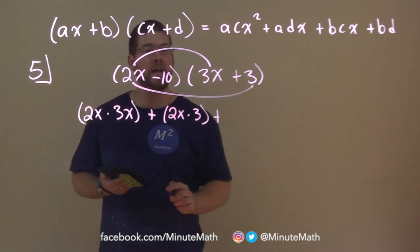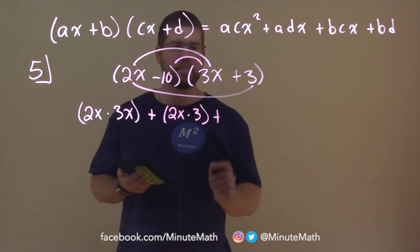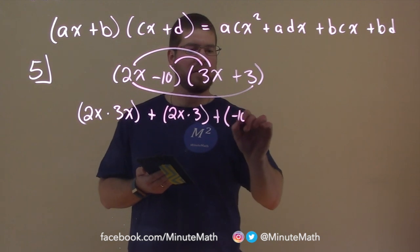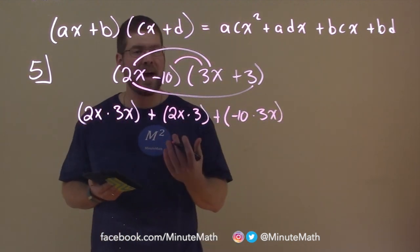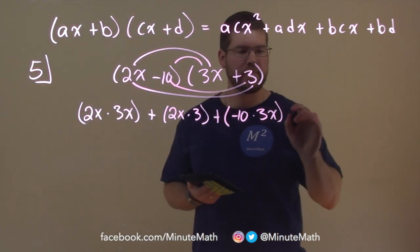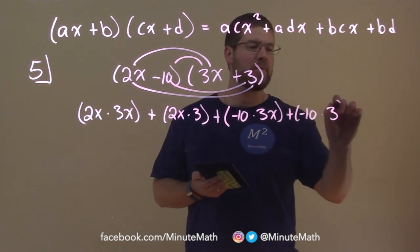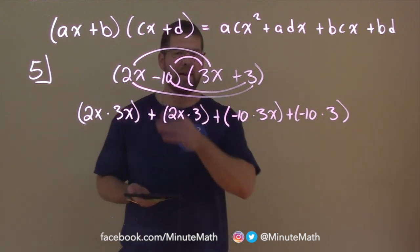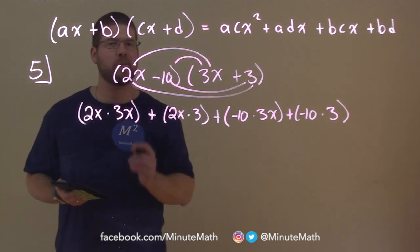Plus, now I see the inner terms: negative 10 times 3X. So plus negative 10 times 3X. And now our last terms in FOIL: negative 10 times 3. So we have plus negative 10 times 3. As you get better, you won't show this step — you'll just multiply it out, but that comes with time and practice.